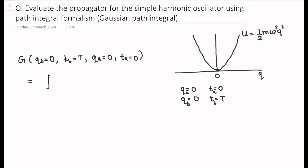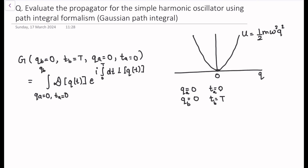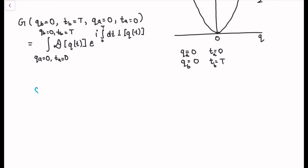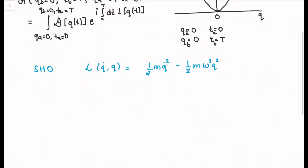We know this propagator is written as a path integral over all possible paths between the initial and final values, with the action given by integration of the Lagrangian as known from classical mechanics. The limits run from q_a equals zero at time zero back to zero at later time T. For a simple harmonic oscillator, the Lagrangian is half m v squared minus half m omega squared q squared, since L equals T minus V.